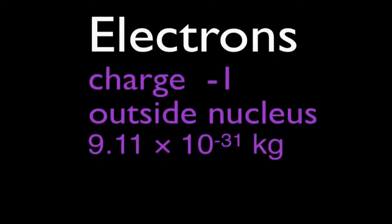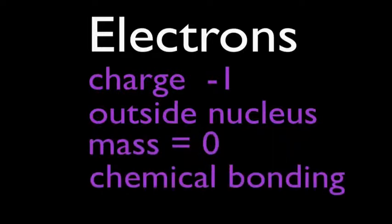And finally, the third subatomic particle which is electron. Electron is a negatively charged subatomic particle that revolves around the nucleus and its mass is 9.11 times 10 to the power minus 31 kilogram. Its mass is negligible, that is zero. This particle participates in chemical bonding.